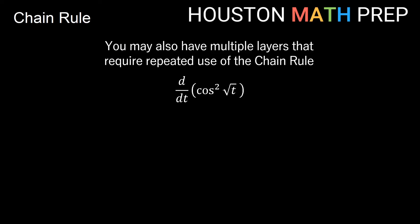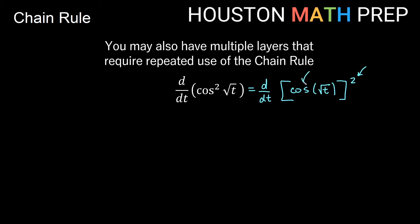We may also have problems where we have multiple uses of the chain rule — many layers. So here I have the derivative with respect to t of cosine squared of square root of t. Think about all the layers: we have square root of t inside of a cosine function, but then the square also says to take all of that and square it. So we have root t inside of cosine, and all of that is inside of the square. We'll need to work outside in: power first, then cosine second, and then all the way inside is the square root of t part — noting that this is really t to the one-half.